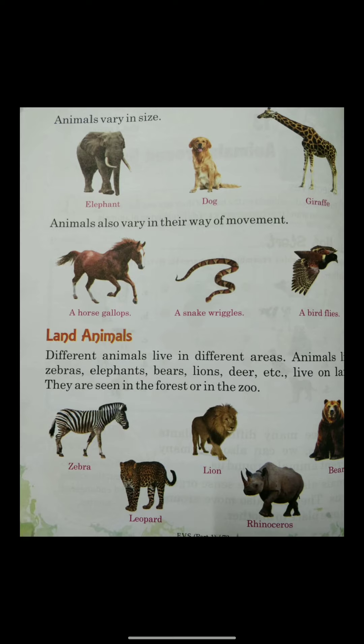Animals vary in size — animals come in many different sizes. Some are small, some are very big, some are tall. As you can see in the first picture, it is an elephant. An elephant is the largest land animal. The second picture shows a dog, and the next picture is a giraffe. Giraffe is the tallest animal.